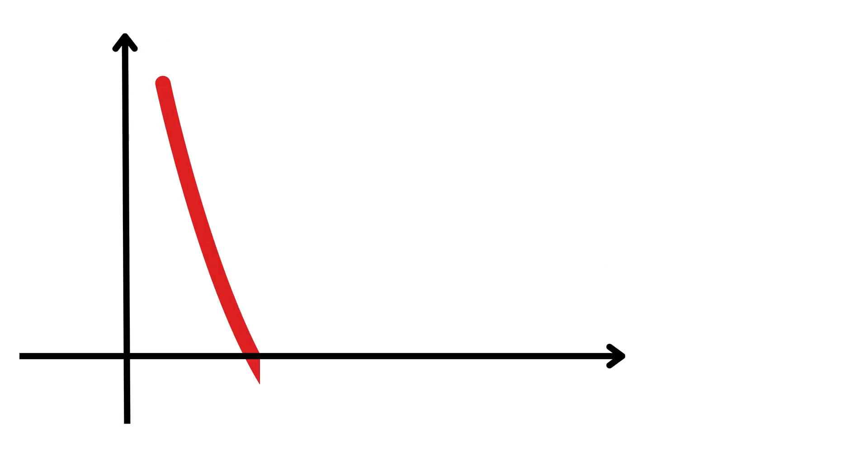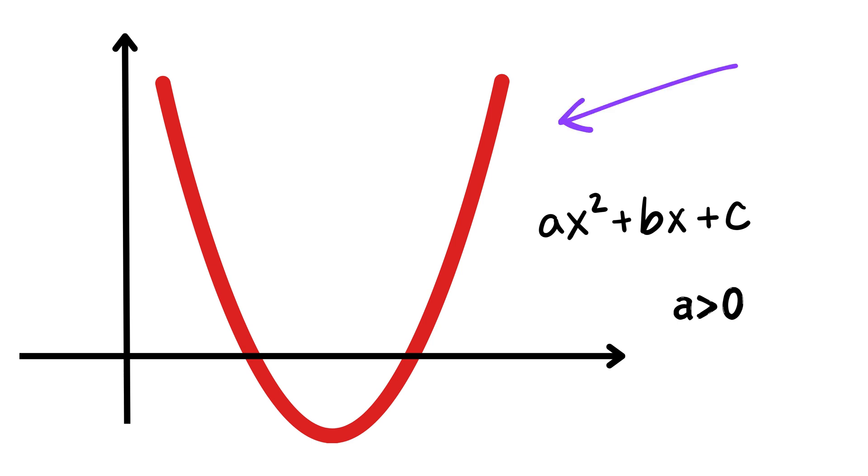If you look at a quadratic equation of the form AX squared plus BX plus C, where A is greater than zero, it looks like this. Now, if we assume these two values are the roots of this quadratic equation, you might notice that this point, where the value of this curve is minimum, is always going to be symmetric with respect to the roots, and therefore its X value will be the average of the roots.